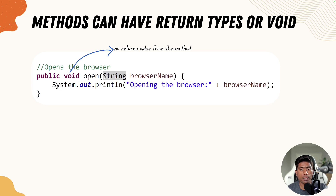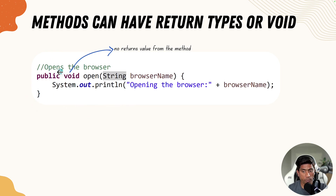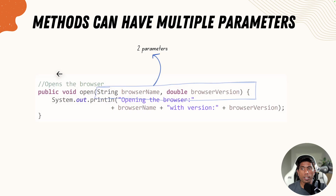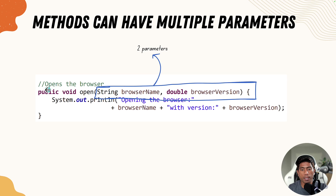The collection framework is yet another important concept before we get into automation testing, so we are going to learn about that as well. At least you have got the idea of how return types work. A method can also have multiple parameters — it is not restricted to just one parameter.